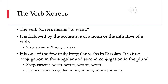The verb хотеть means 'to want,' and is frequently used very similarly to how we use 'to want' in English — a friendly, pleasant change. When we use it in a sentence, we can use it with the accusative of a noun, like я хочу книгу — it takes a direct object — or the infinitive of a verb. Just like English.